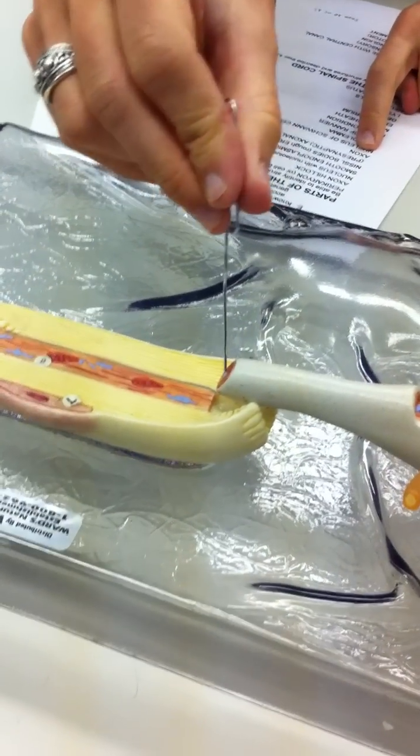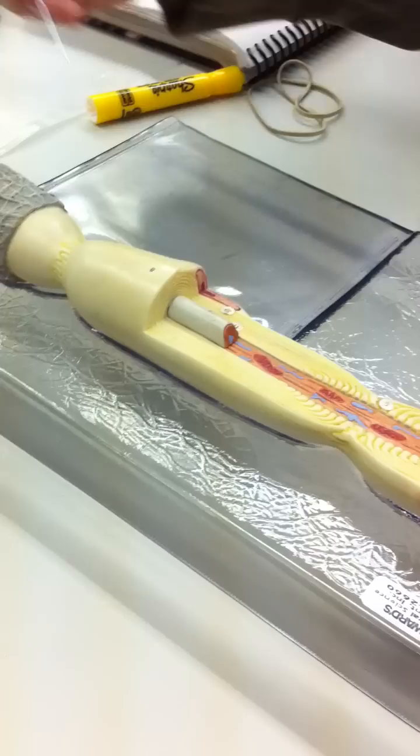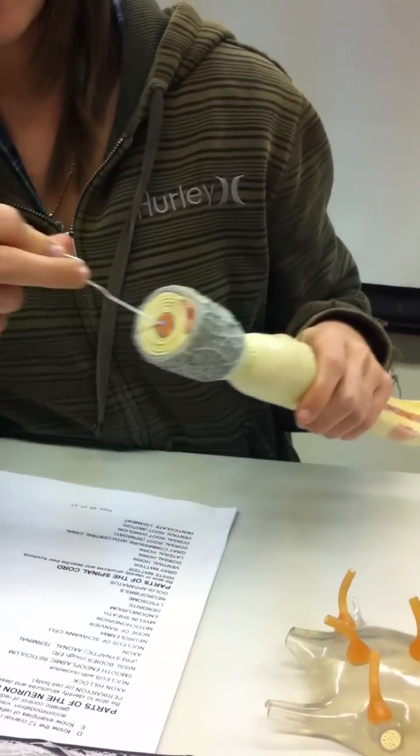And you have the axon itself. The axon actually goes all along here. It's just cut. And then you can see it right here. This is still part of the axon.